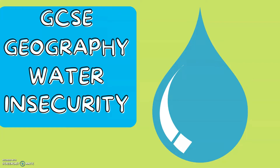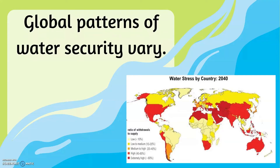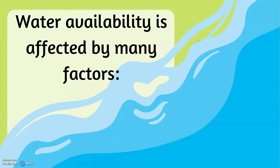GCSE Geography: Water Insecurity. Global patterns of water security vary. Water availability is affected by many factors.